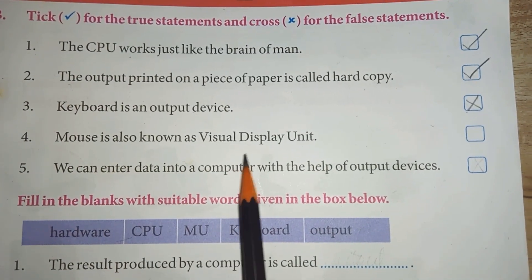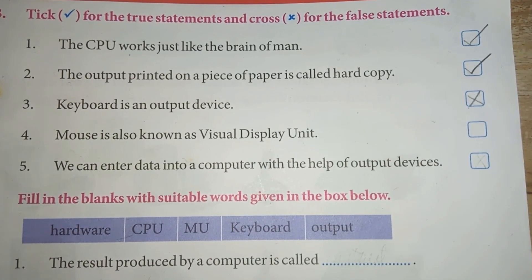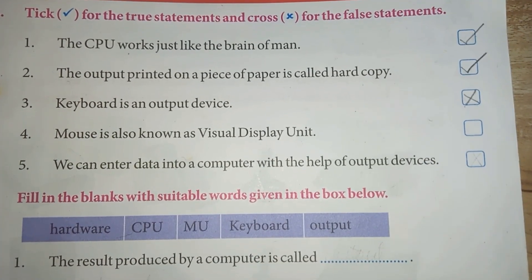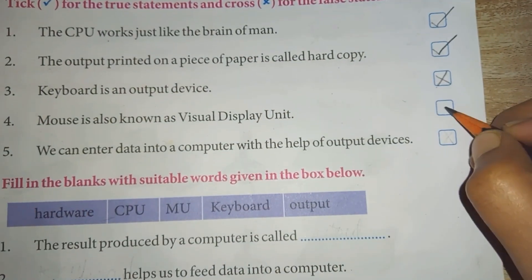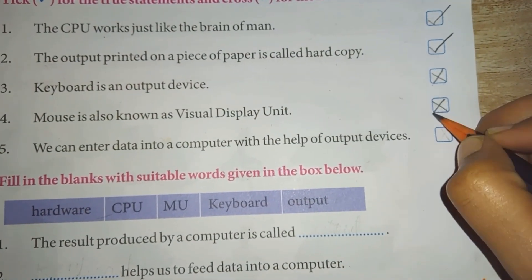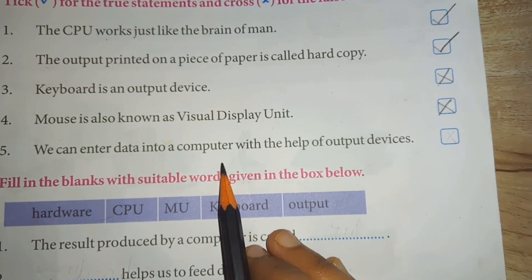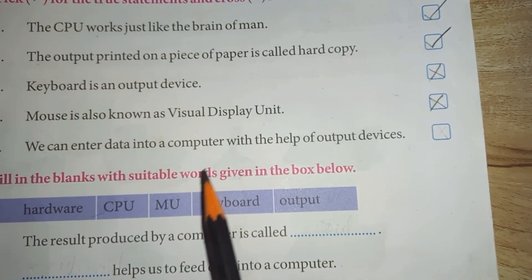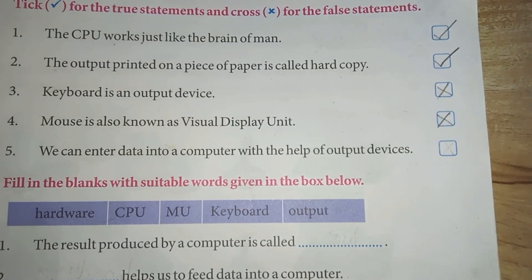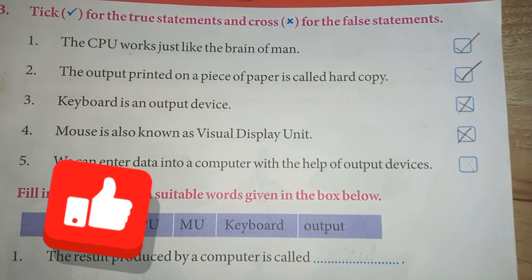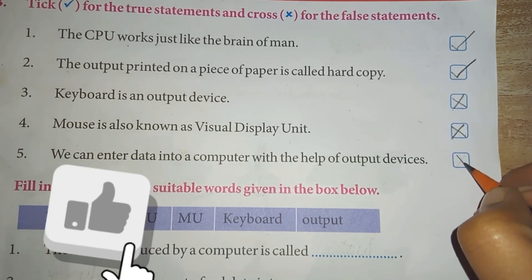Mouse is also known as visual display unit — true or false? We can enter data into a computer with the help of output devices — true or false? We enter data through input devices, not output devices. This will also be false.